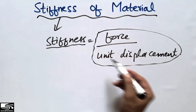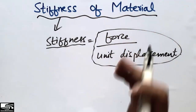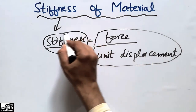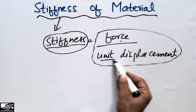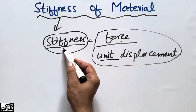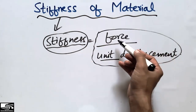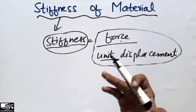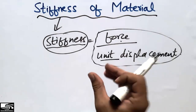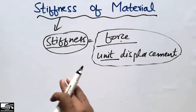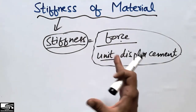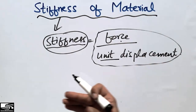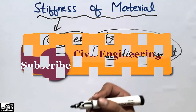Stiffness is directly proportional to force and inversely related to unit displacement. A more stiff material means more force is required to produce unit displacement, while a less stiff material means less force is required to produce unit displacement. So it shows the ability of a material to resist deformation, displacement, or deflection.